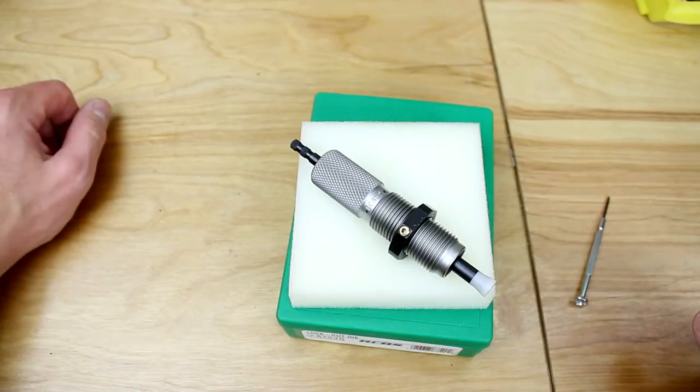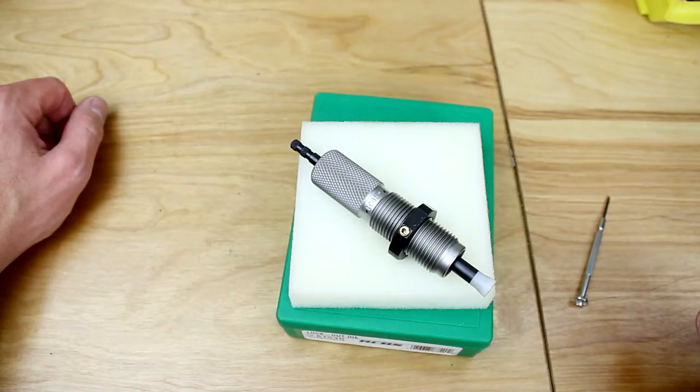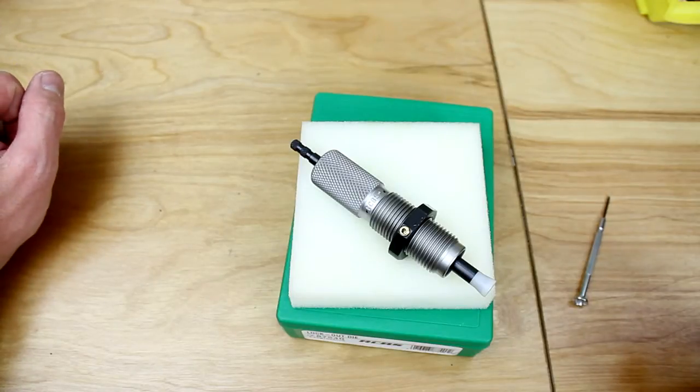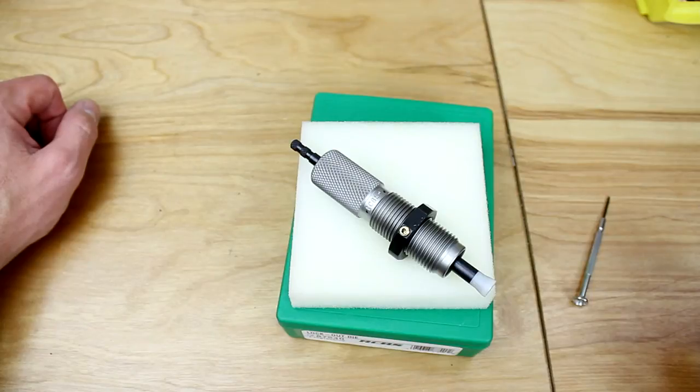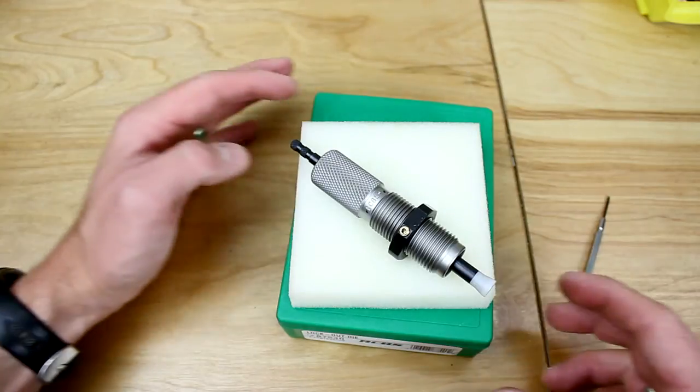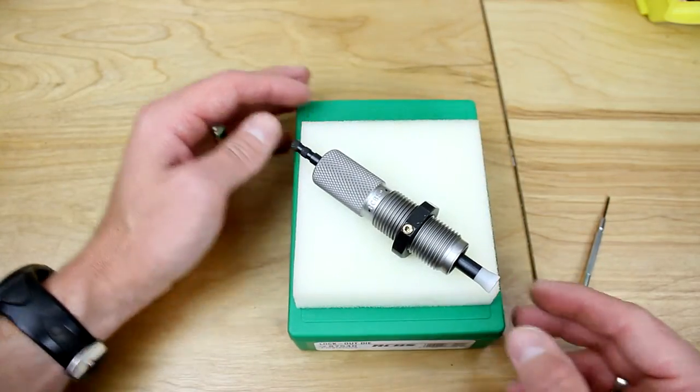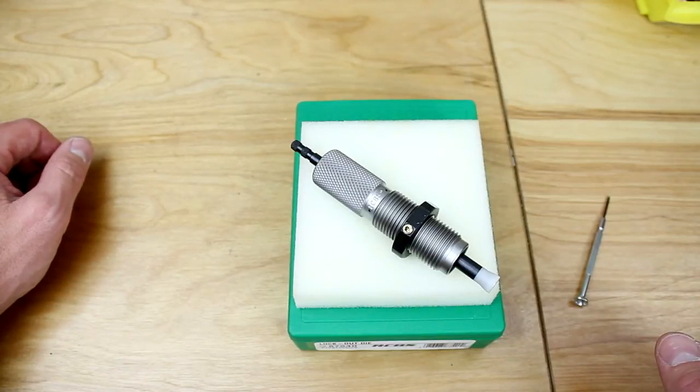We could check for burrs. We could check for dirt and crud. It might be a good idea to lube this with graphite or some other lubricant. We want to have something fairly light. Nothing that is going to gum up. But that is the basic procedure for disassembling and assembly of the RCBS lockout die.